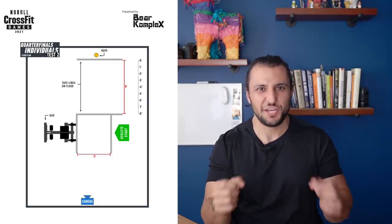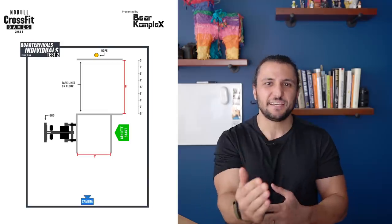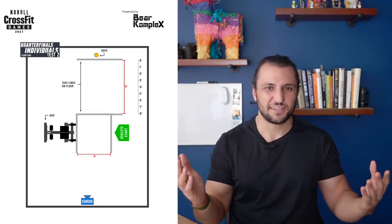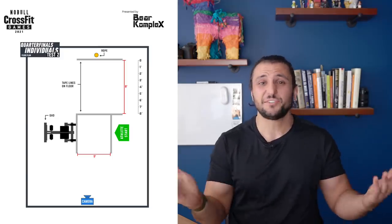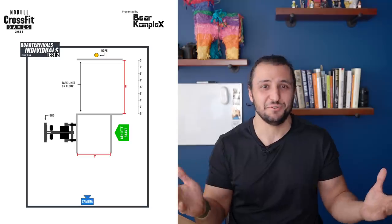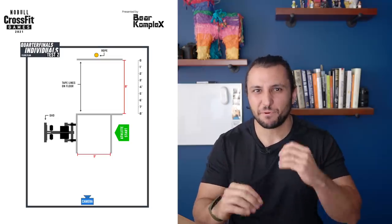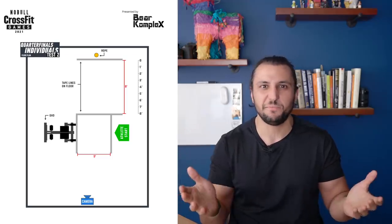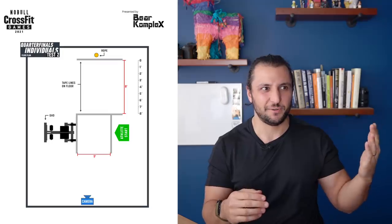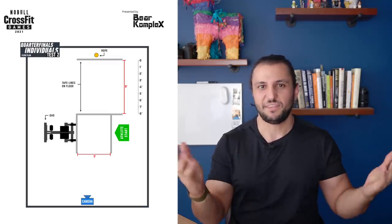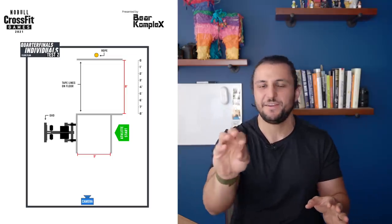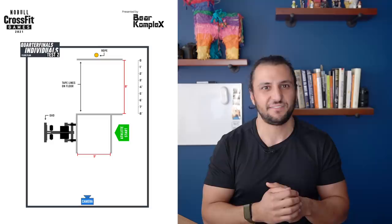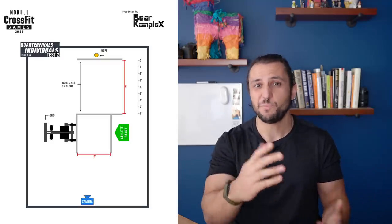Event number two seems to require a rope to climb and a GHD, and the start is facing the GHD — which probably means the first thing you do is GHD sit-ups. Given how simple and elegant programming for this type of thing tends to be, my guess at this workout would be something like 50-40-30-20-10 GHD sit-ups and 5-4-3-2-1 rope climbs. That would be my throw-the-darts-at-the-dartboard type guess, but either way: GHDs and rope climbs for event number two.